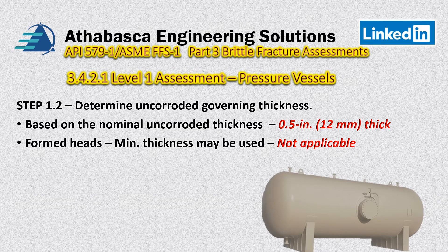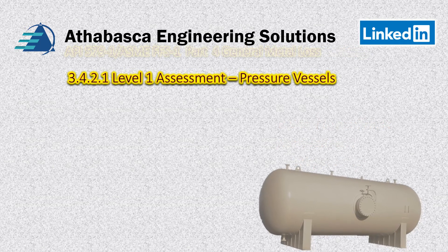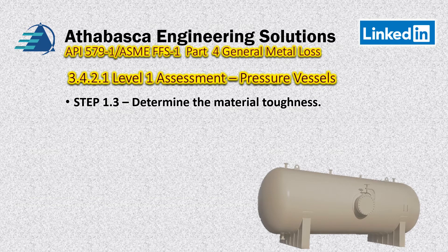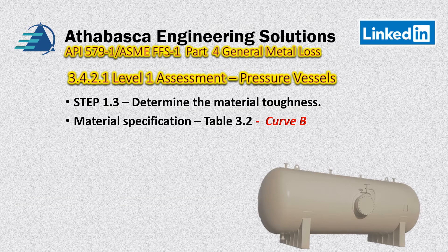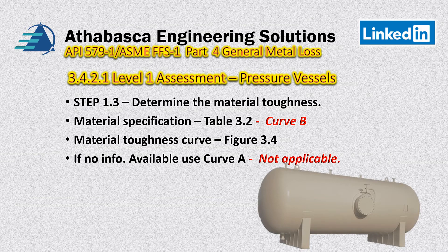For formed heads, the minimum thickness may be used — not applicable here. For pipe components, you subtract the mill tolerance for piping — also not applicable. Step 1.3: determine the material toughness. In this case we're going to use material specification Curve B, found on Table 3.2. We'll use Figure 3.4 because different classes of materials have different toughness values, and that is how API differentiates between them. If no curve is available, they say to use Curve A.